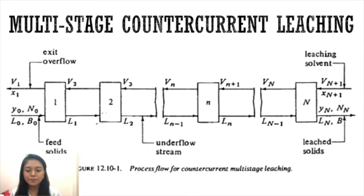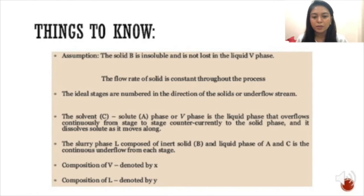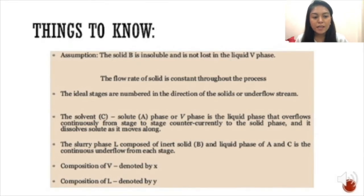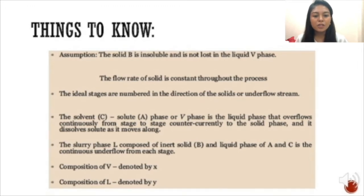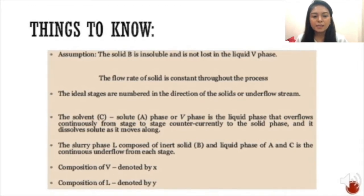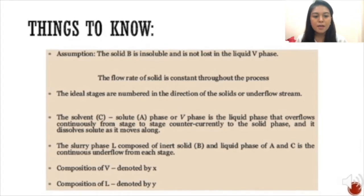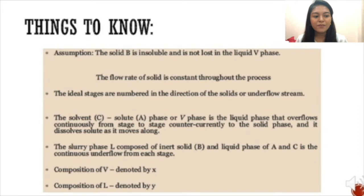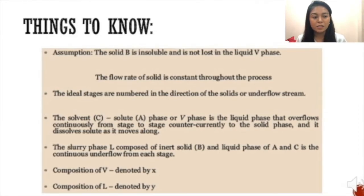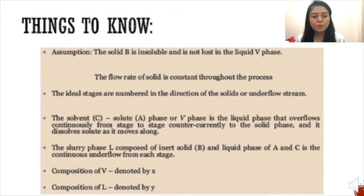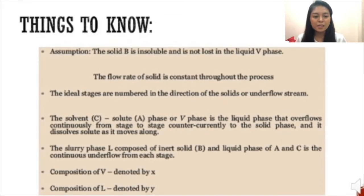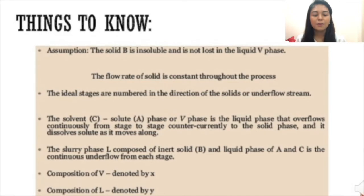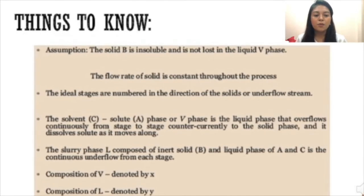There are things you need to remember for this process. Solvent C, or what we call the V phase, is the liquid phase that overflows continuously from stage to stage counter currently to the solid phase. The slurry phase L is composed of the inert solids B and a liquid phase of A and C, and continuously moves in underflow from each stage. Note that the composition of the B phase is denoted by x and the composition of the L phase is denoted by y, which is the reverse of liquid-liquid extraction.